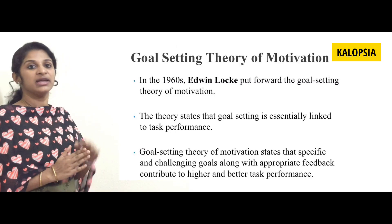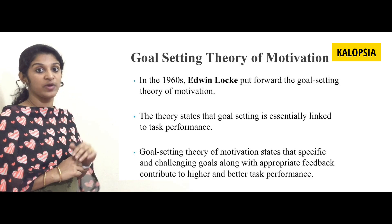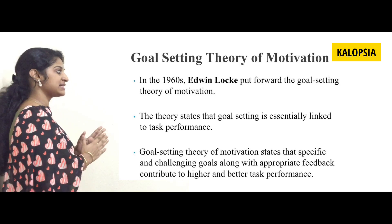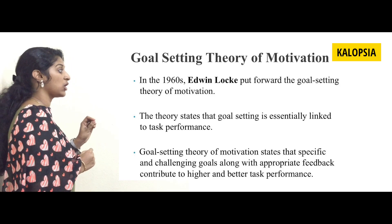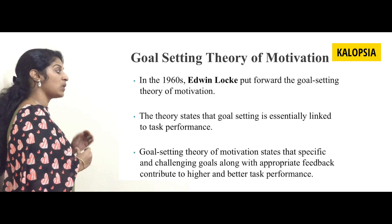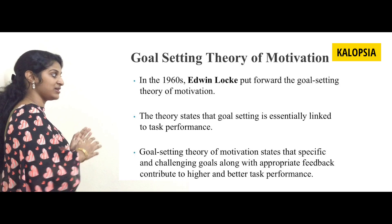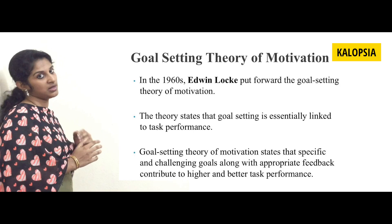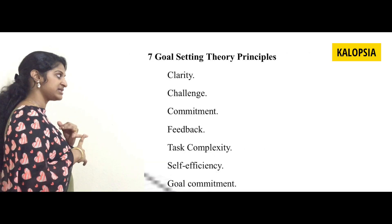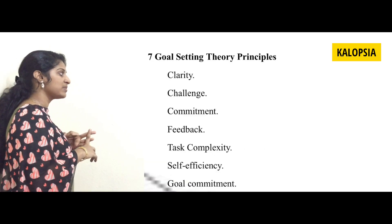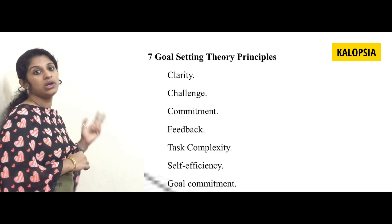The last theory under incentive theory is goal setting theory of motivation. It was put forward by Edwin Locke in the 1960s. Goal setting theory states that specific and challenging goals, along with appropriate feedback, contribute to higher and better task performance. This states that goal setting is essentially linked to task performance. For this, we have seven sets of principles: Clarity, Challenge, Commitment, Feedback, Task Complexity, Self-Efficiency, and Goal Commitment.